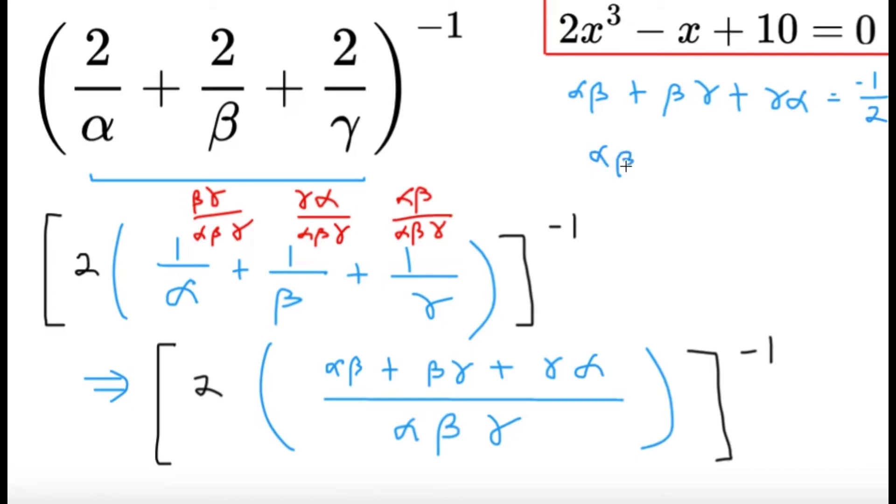And then for the product of the roots, alpha beta gamma, it's going to be negative 10 over 2, which is going to be negative 5. Alright, so the numerator here is going to be negative 1 half. The denominator here is going to give us negative 5.